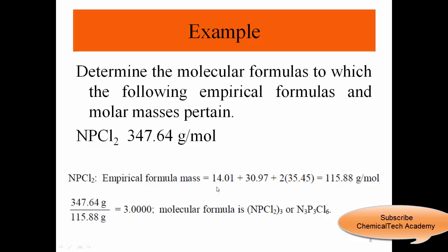If you add all of them, we're gonna get 115.88 grams per mole. Then we need to find the ratio: 347.64 divided by 115.88 gives us 3. So the molecular formula will be this times 3, so we have NPCl2 times 3, or N3P3Cl6.